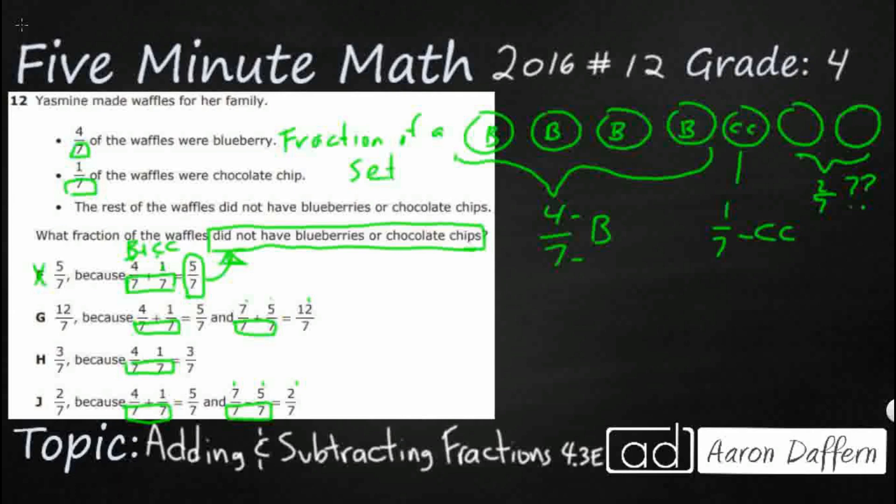We do the same thing here on G. We take our blueberries, chocolate chips, we get our five sevenths, and then we just add the total. We say all the waffles plus the blueberry and chocolate chips, which gets us this improper fraction. We've got more than seven. It's 12 sevenths, and that's not what we're looking for. We're looking for two sevenths.